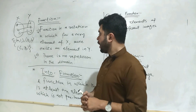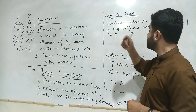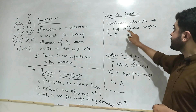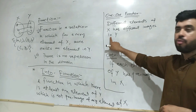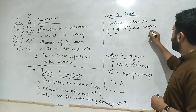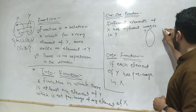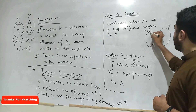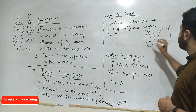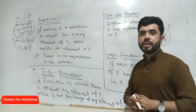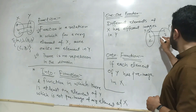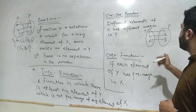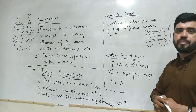Now we will discuss two types of functions. The first is the one-to-one function. A one-to-one function is one where different elements of X have different images in Y. Suppose I have two sets X and Y with elements A, B, C and 1, 2, 3. Different elements of X have different images in Y, so the function is one-to-one.